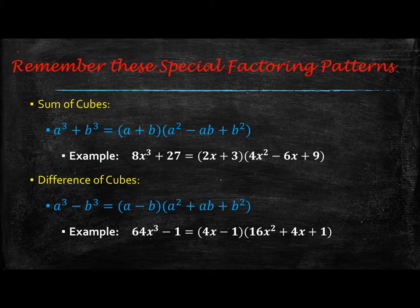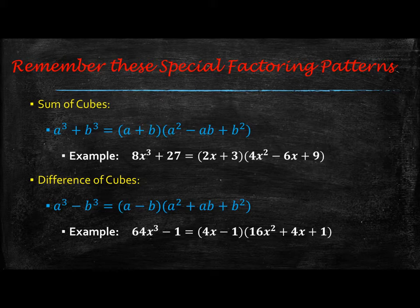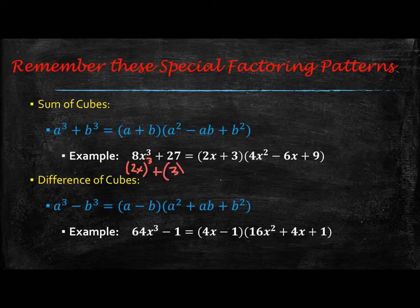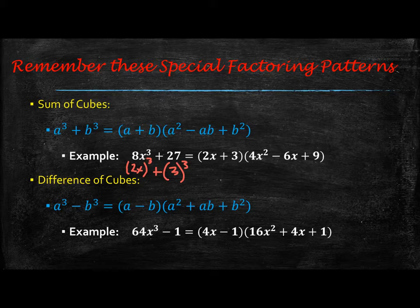When you have a sum of cubes, remember that's two terms that can be written as something to the 3rd power and you're adding them. That factors to be (a + b)(a² - ab + b²). An example of that is 8x³ + 27, because that can be written as (2x)³ + 3³. So a = 2x and b = 3, giving us (2x + 3)(4x² - 6x + 9).